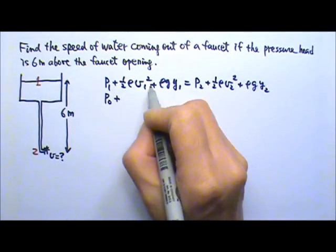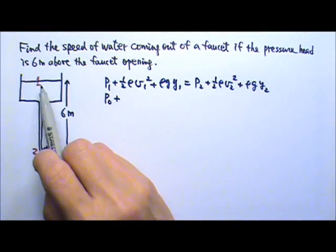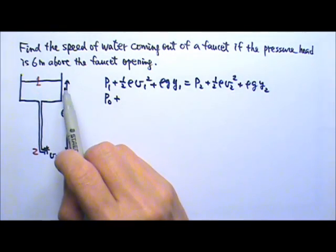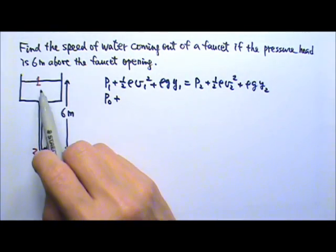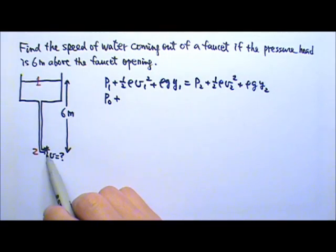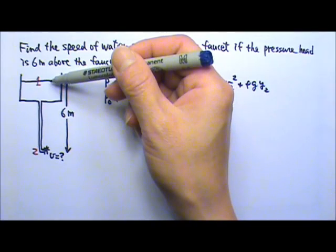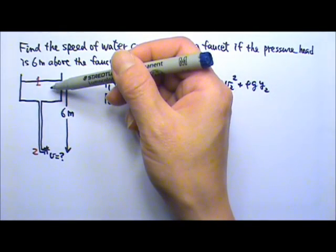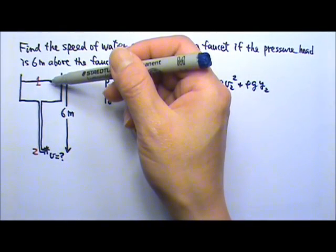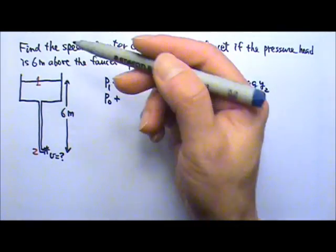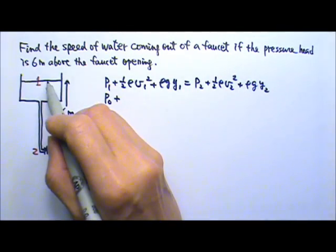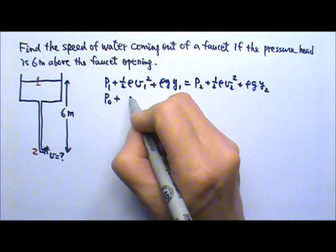And then we have the one half rho V1 squared. Now the water tanks are usually very big, much bigger than the cross sectional area of the faucet. So when the faucet is on, the water level in the tower is going to go down. But it is going to go down very slowly. So the speed over here is almost 0.